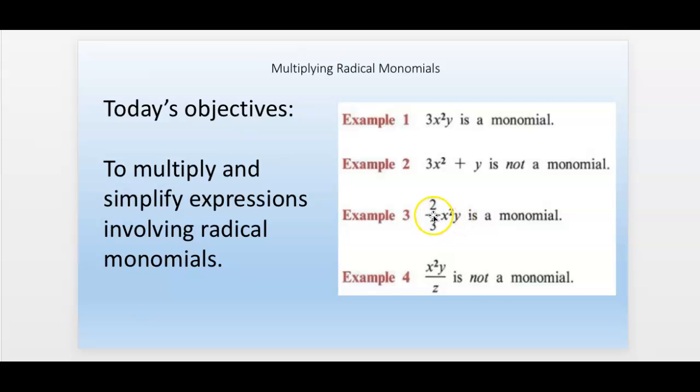Example three. This is a monomial right here. This is just a number two-thirds. But example four, this is not a monomial. You have the variable in the denominator.